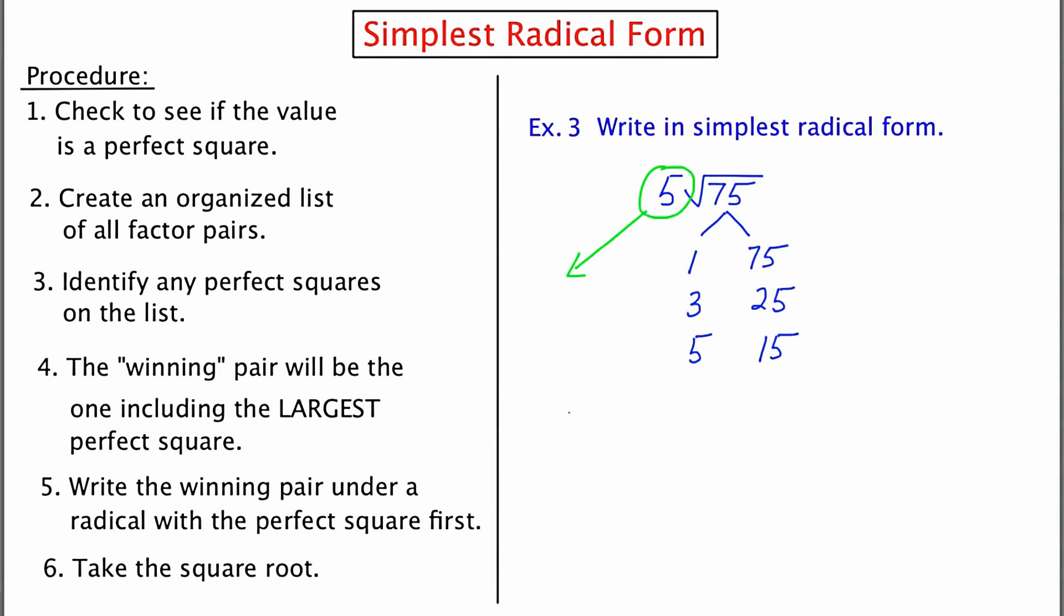The next part of the procedure has us identify any perfect squares. They are 1 and 25. The winning pair is going to be the pair that contains the largest perfect square. 25 is the largest perfect square, so this is the winning pair. Again, I like to write the perfect square first. So instead of writing 3 times 25, I'm going to write 25 times 3.